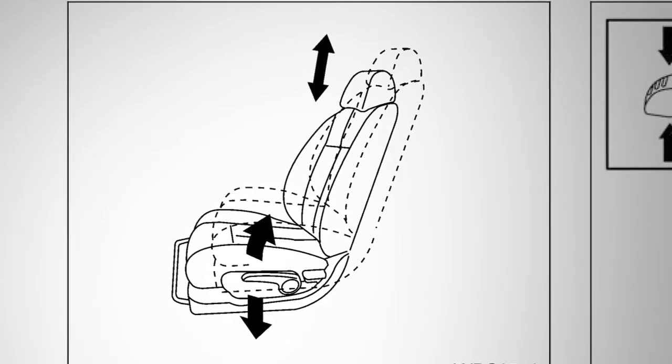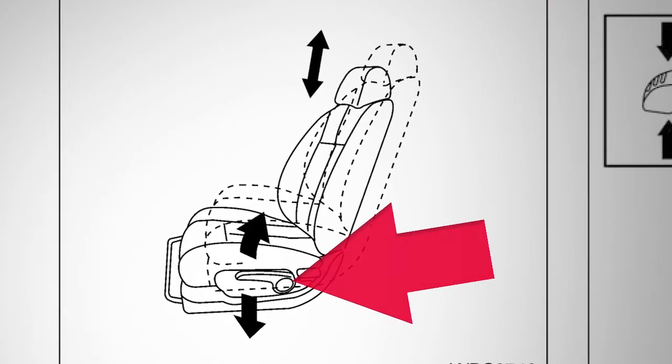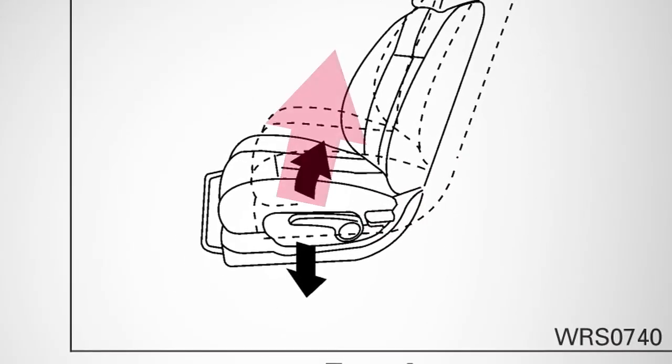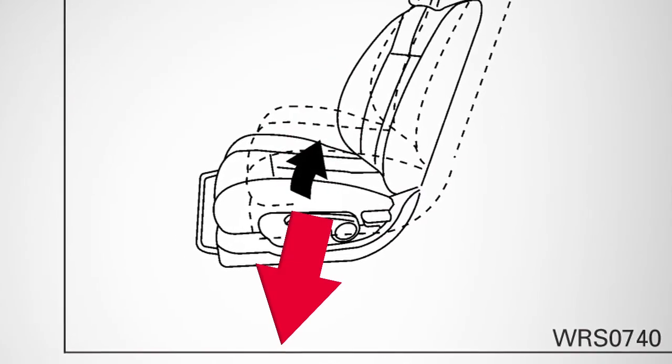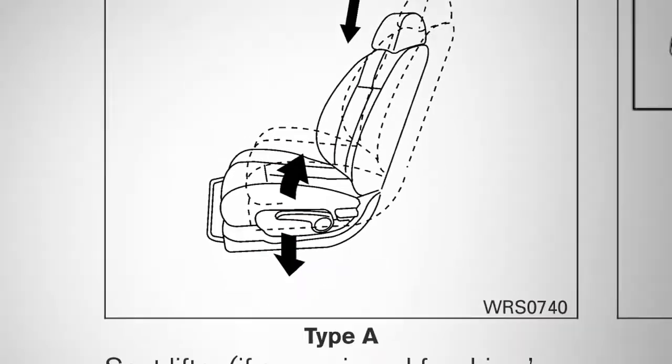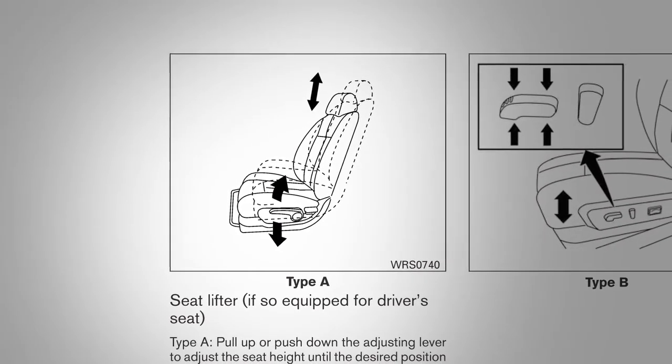your seat height can be adjusted using this lever located on the outside of the seat base. Pull up or push down on the lever to adjust the height of the seat. Release the lever when a comfortable position is achieved.